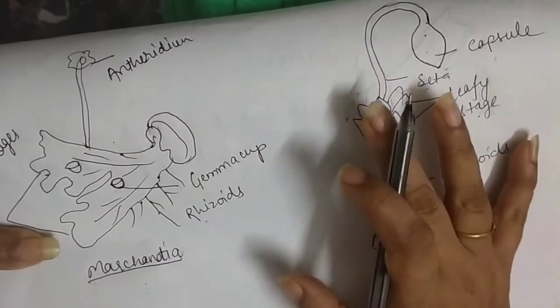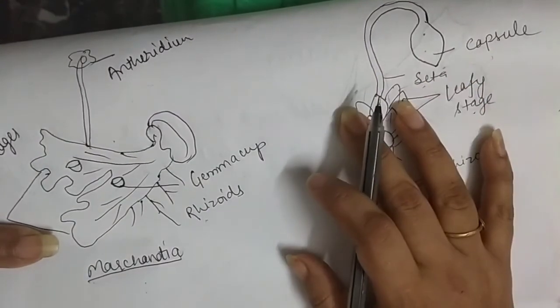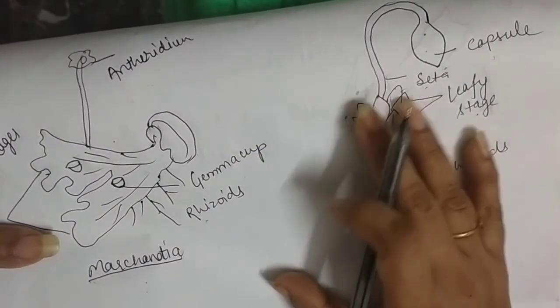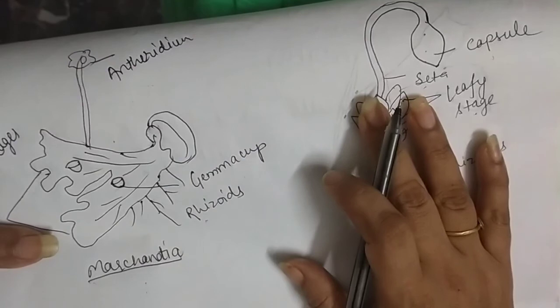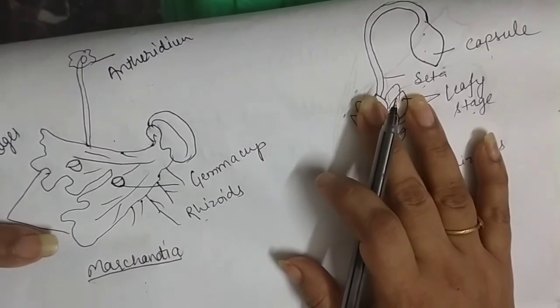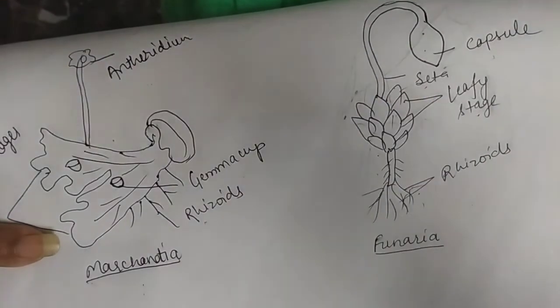So now we have completed another part of the Bryophyta — liverworts and mosses — and the differences between them. Next time we are going to discuss the Pteridophyta. Till then, goodbye and have a beautiful day.